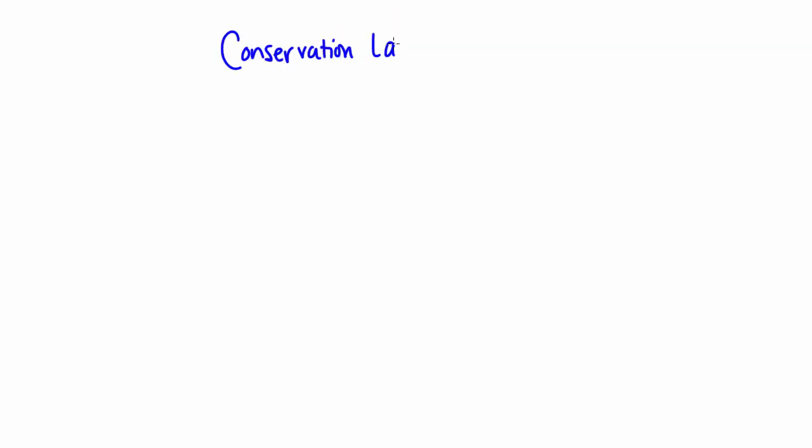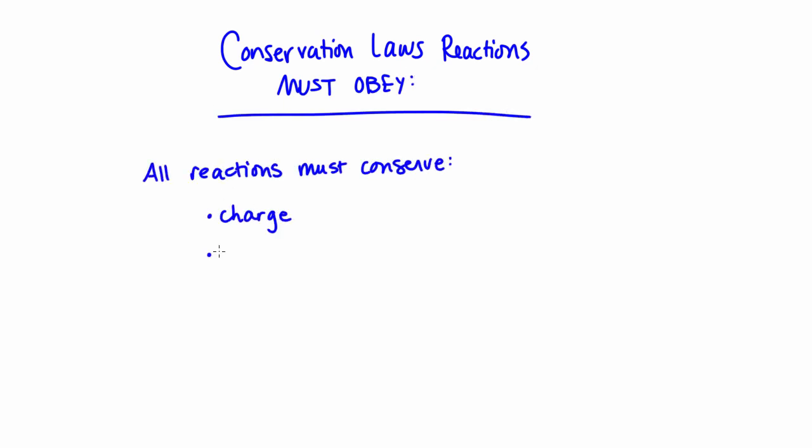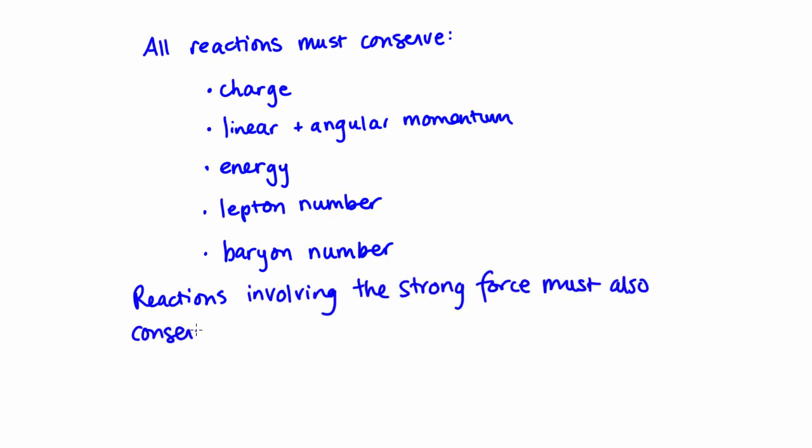So to recap, reactions have to conserve charge, linear and angular momentum, energy, lepton number, baryon number, and strangeness, but only for reactions involving the strong force. So as you can see, there are a lot of requirements for each type of reaction, but meson conservation isn't one of them. As you'll learn in the next video, that's because there's another more fundamental class of particles that we have yet to discover.